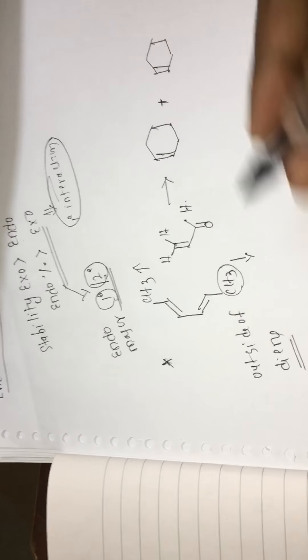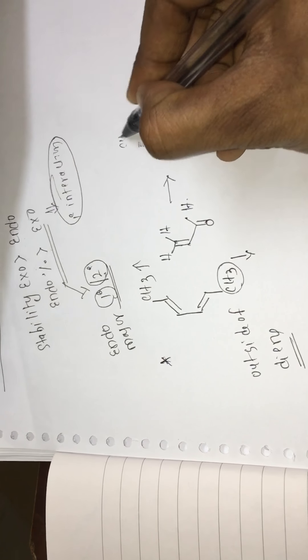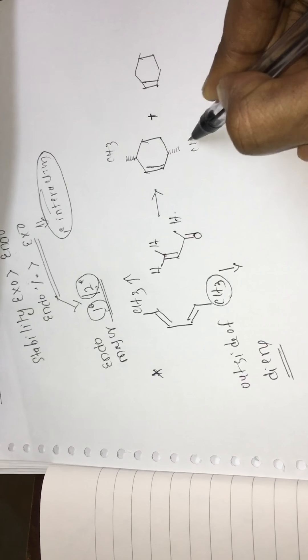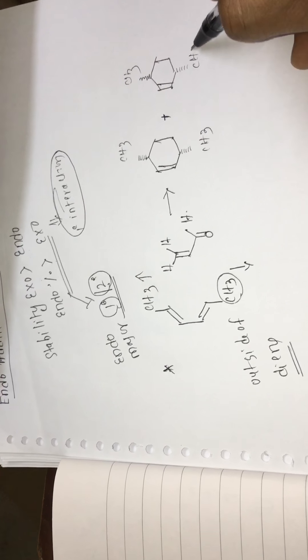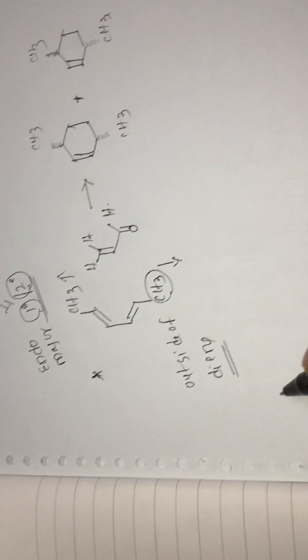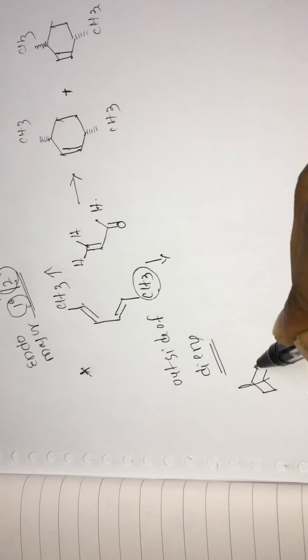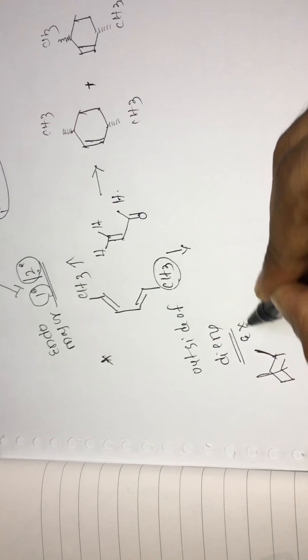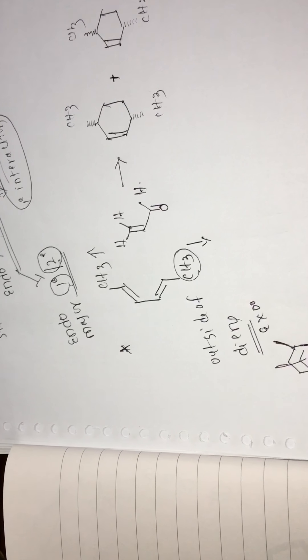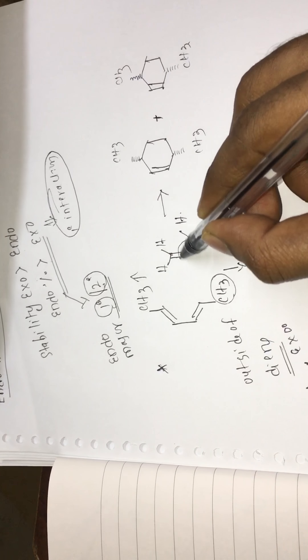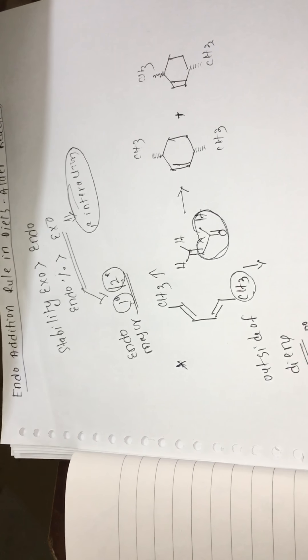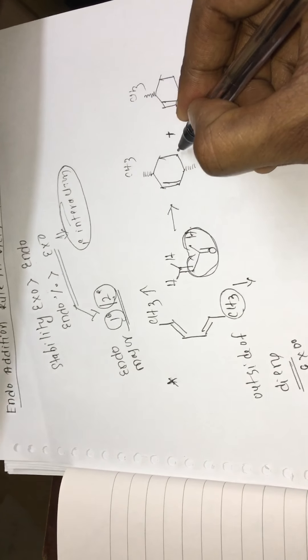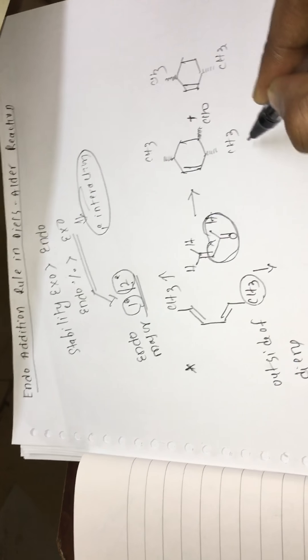Outside groups means they come below the plane. The methyl group comes here and here also the methyl group comes below. So in this system, if a group is above the plane that equals exo, and below the plane that equals endo. Here we have an electron-withdrawing group, and if we keep this electron-withdrawing group down, that is called endo.